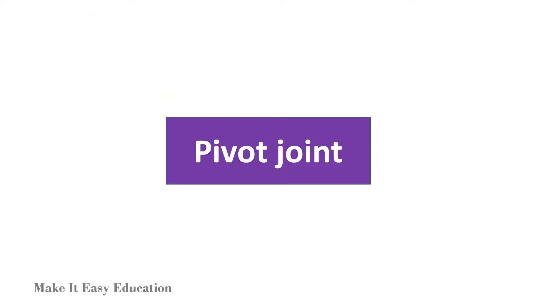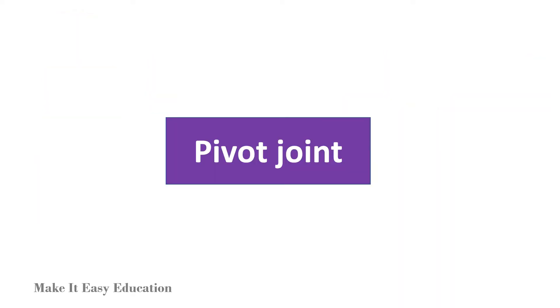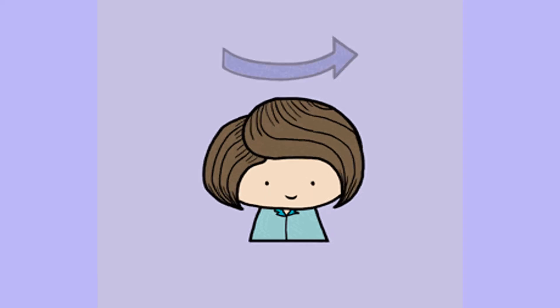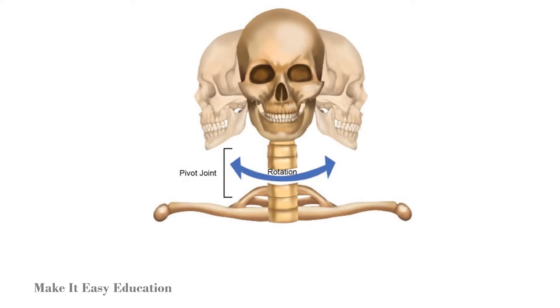Pivot joint: A pivot joint allows us to move our head sideways. Pivot joints are found between the first and the second vertebrae of the neck region of the backbone.